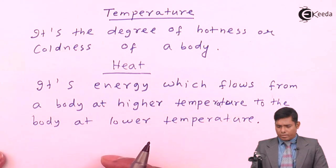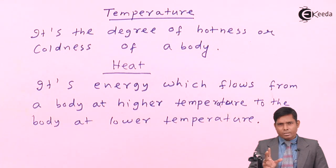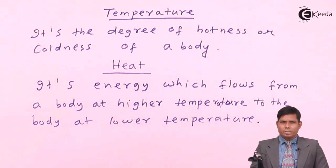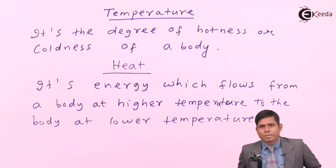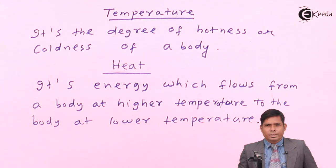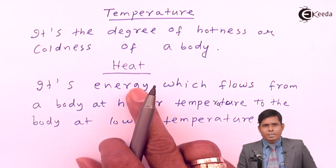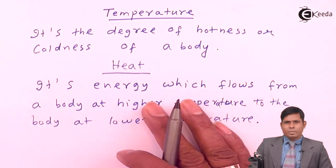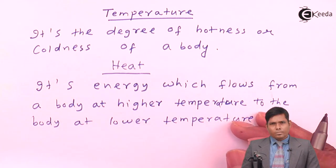Heat flows from high temperature to low temperature — that means heat flows because of temperature difference. Temperature doesn't flow because of a heat difference. The quantity that flows is heat, not temperature. Temperature is the intrinsic property of the body. When there is a higher temperature, heat will start flowing from the body at high temperature to the body at low temperature. Heat is energy; temperature is a property. Temperature is measured in degree centigrade, degree Fahrenheit, or Kelvin, while heat is measured in Joules.